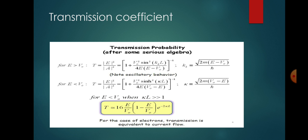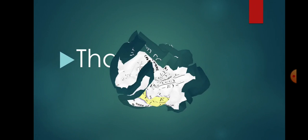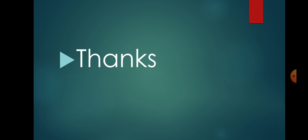To have a finite transmission coefficient, we require a small tunneling distance d, a low potential barrier qV₀, and a small effective mass. These conditions will be used for devices known as tunnel diodes. Here we have discussed the condition for transmitting electrons through a barrier.